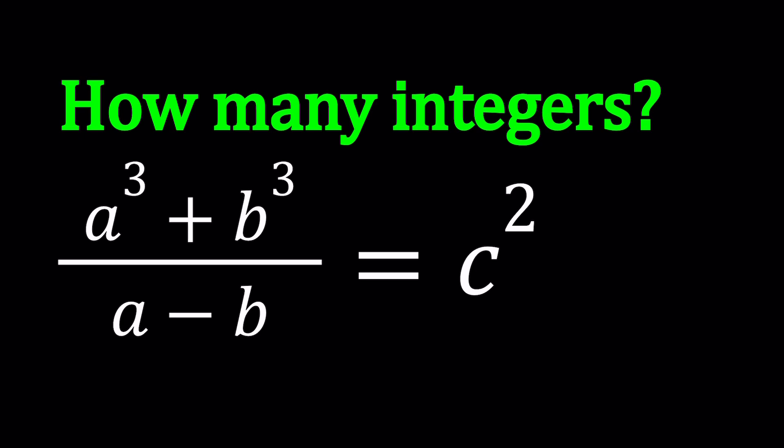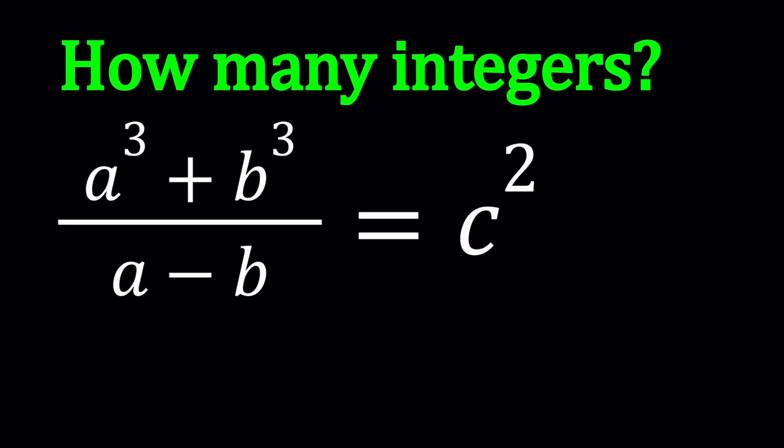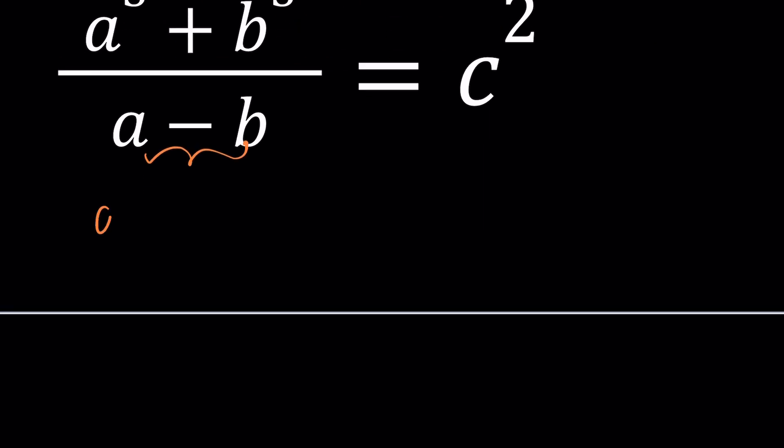Since we don't have to solve or find all solutions, we're in good shape, and we can experiment. Since a, b, c are integers, we can look at some particular values, see if they satisfy the equation. But one thing to note is that the denominator cannot be zero. In other words, a and b should not be equal. If a minus b does not equal zero, that implies a does not equal b. So a and b have to be different.